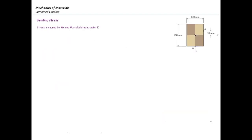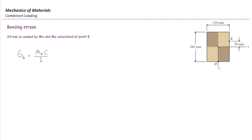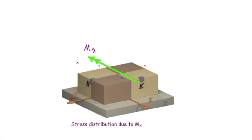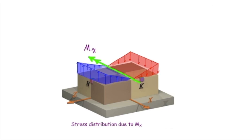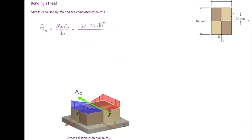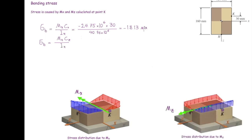There are two bending stresses to consider. The stress from MX uses the X-family equation; MX belongs to the X family, so everything gets the X subscript. The stress distribution produces compression on the right side and tension on the left, giving negative 18.13 MPa at point K. The stress from MZ produces tension at point K due to the direction of the moment about the Z-axis, giving positive 25.39 MPa.